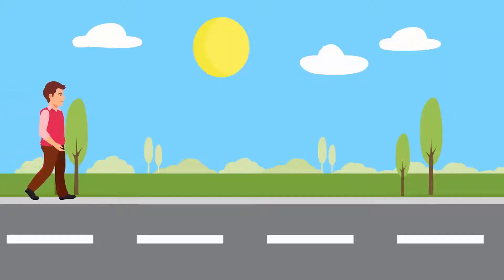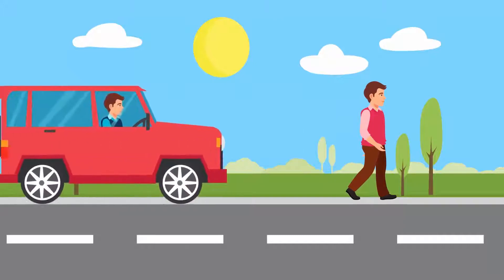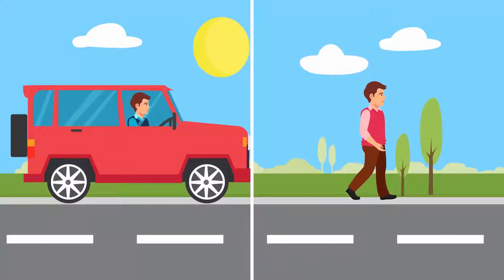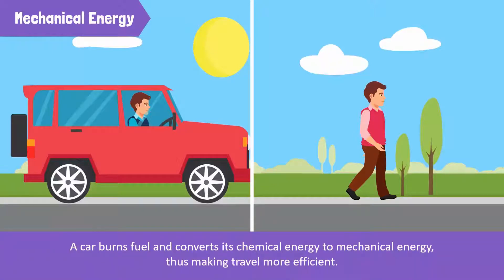For example, if you go to the market on foot or by car, which of the two means of travel would be more comfortable and less time-consuming? Of course, traveling by car. You can easily cover longer distances in a shorter span of time. This is an example of mechanical energy. Your car burns fuel and converts its chemical energy to mechanical energy, thus making travel more efficient.